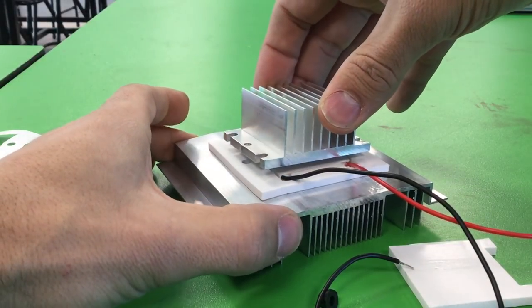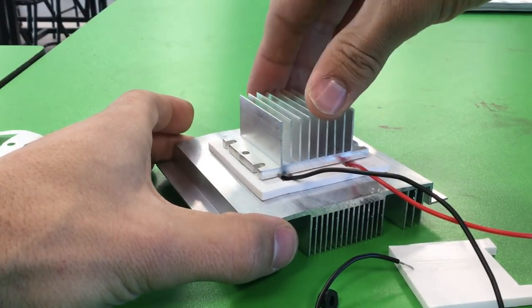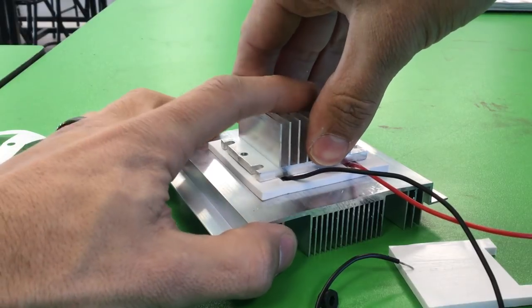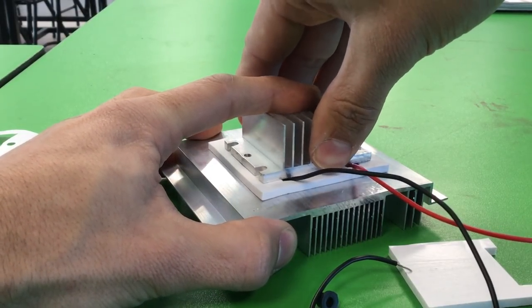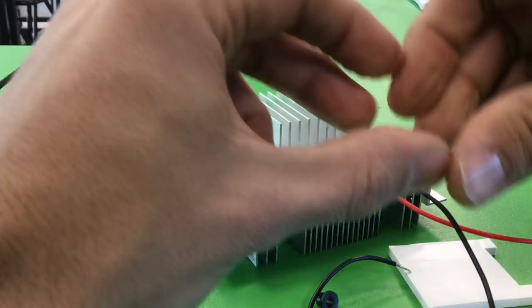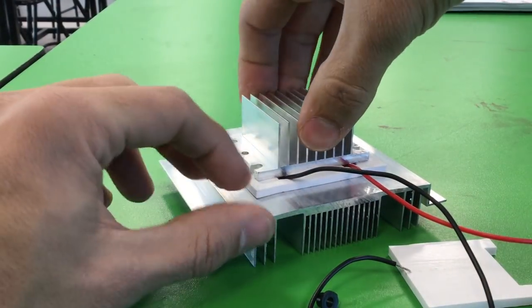Just like we did with the bottom one, wiggle, wiggle, wiggle, wiggle. You should see the Peltier moving around a little bit as well, and this will actually help spread it out underneath.